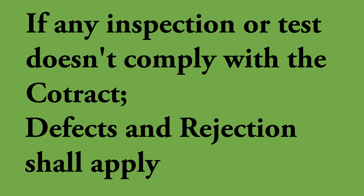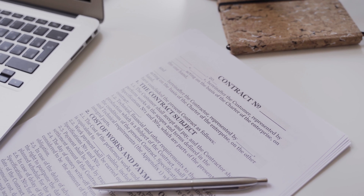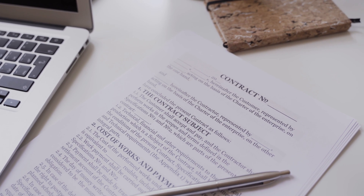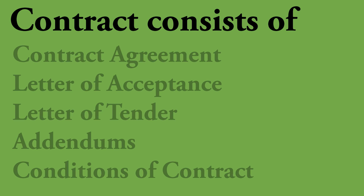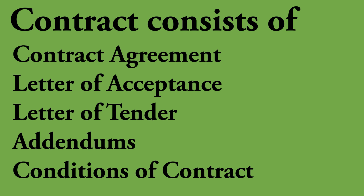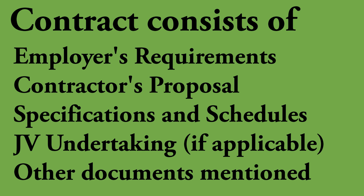Next, we'll talk about the definition 'contract'. When you consider a construction contract, it doesn't mean only the contract agreement — there are a lot more to follow, such as: letter of acceptance, letter of tender and addendums, conditions of contract, employer's requirements, contractor's design and price proposals, specifications, JV undertaking if applicable, and other documents mentioned in the contract agreement or LOA. So a construction contract is a very vast area.